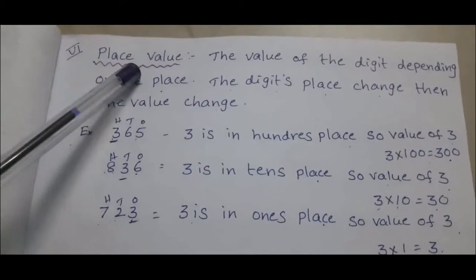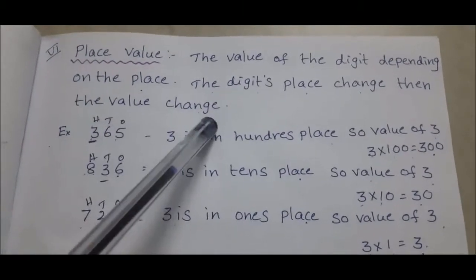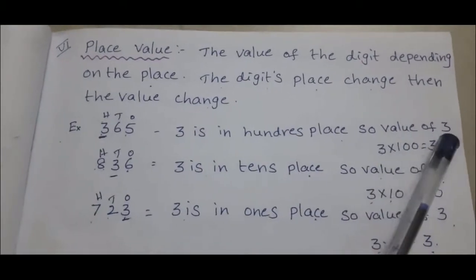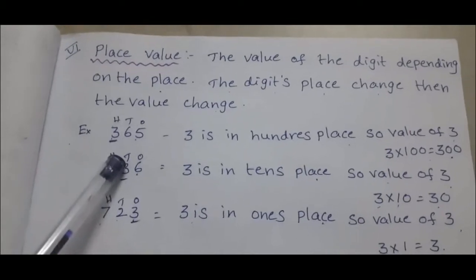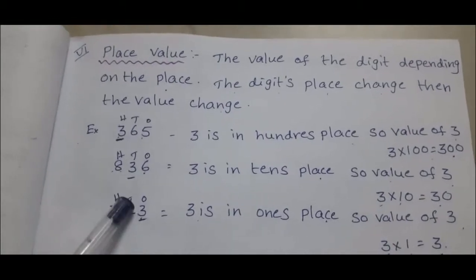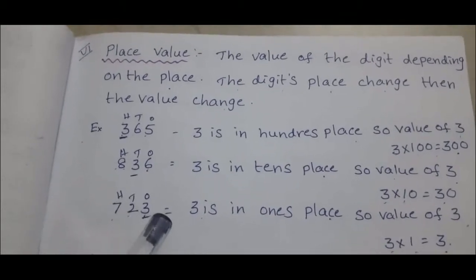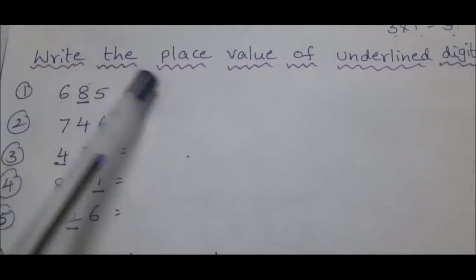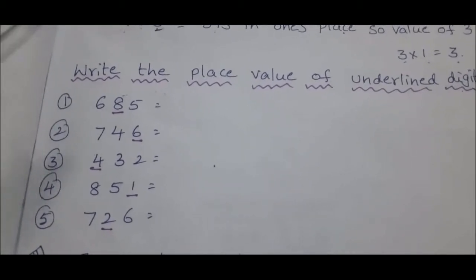Next topic: place value. The value of a digit depends on its place. If the digit's place changes, the value changes. Example: in 365, 3 is in the hundreds place, so value of 3 is 3 × 100 = 300. In 836, 3 is in tens place, so value of 3 is 3 × 10 = 30. Here, 3 is in ones place, so value of 3 is 3. So 3 is in different places and the value of 3 is also different. Write the place value of the underlined digits using the given examples.